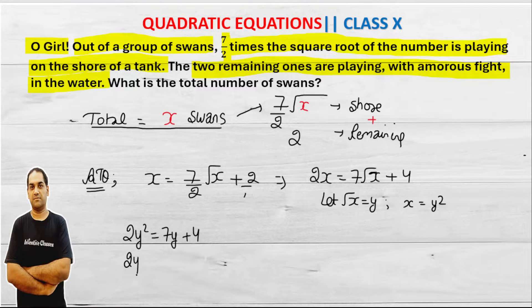If I rearrange this here, then this will become something like this - this plus 4 won't come. When these change their position, both will become minus.